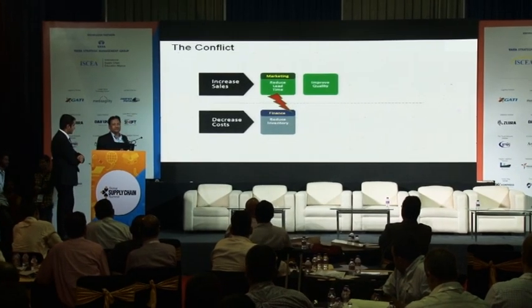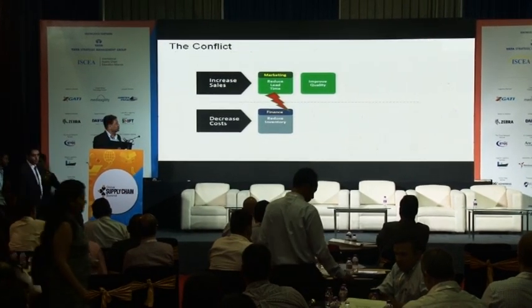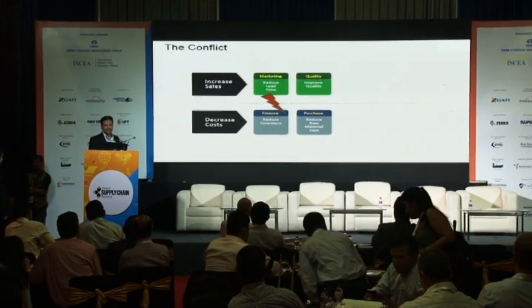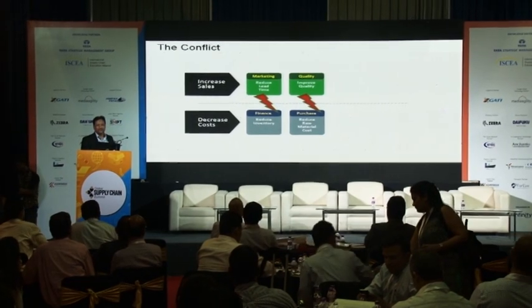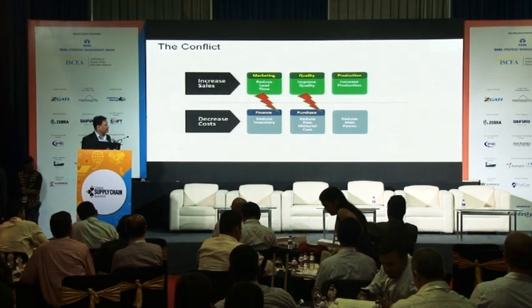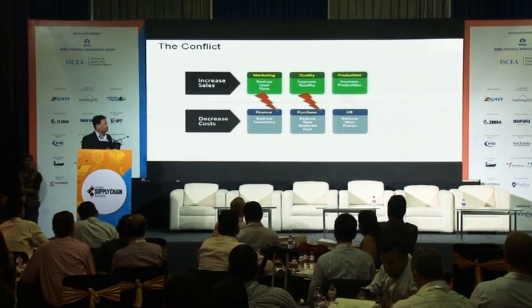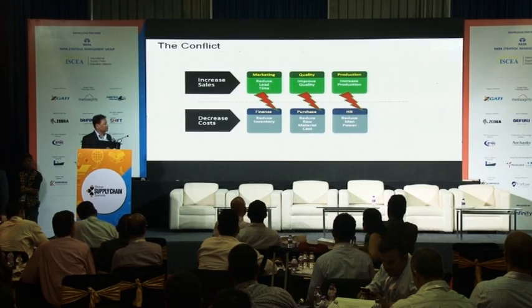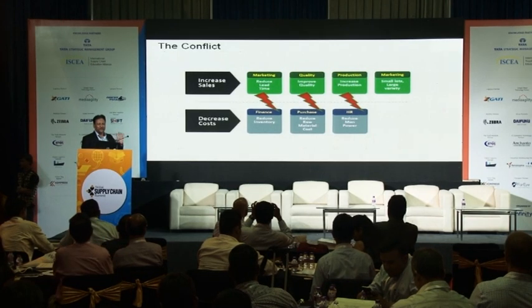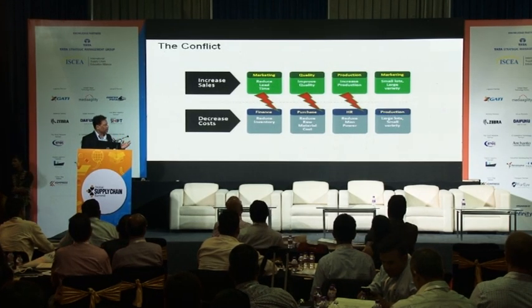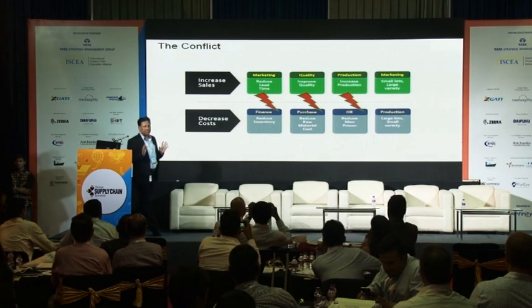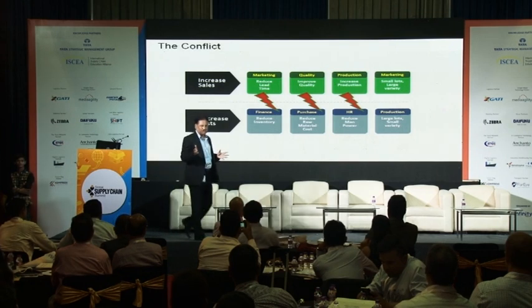Improve quality — required for sales increase. While reduced raw material cost is required to reduce expenses. Increase production — the production guy would say reduce manpower. Marketing says small lots, large variety, short lead time. While the production guy says large lots, very little variability. How do you function in this sort of scenario? What do you do?